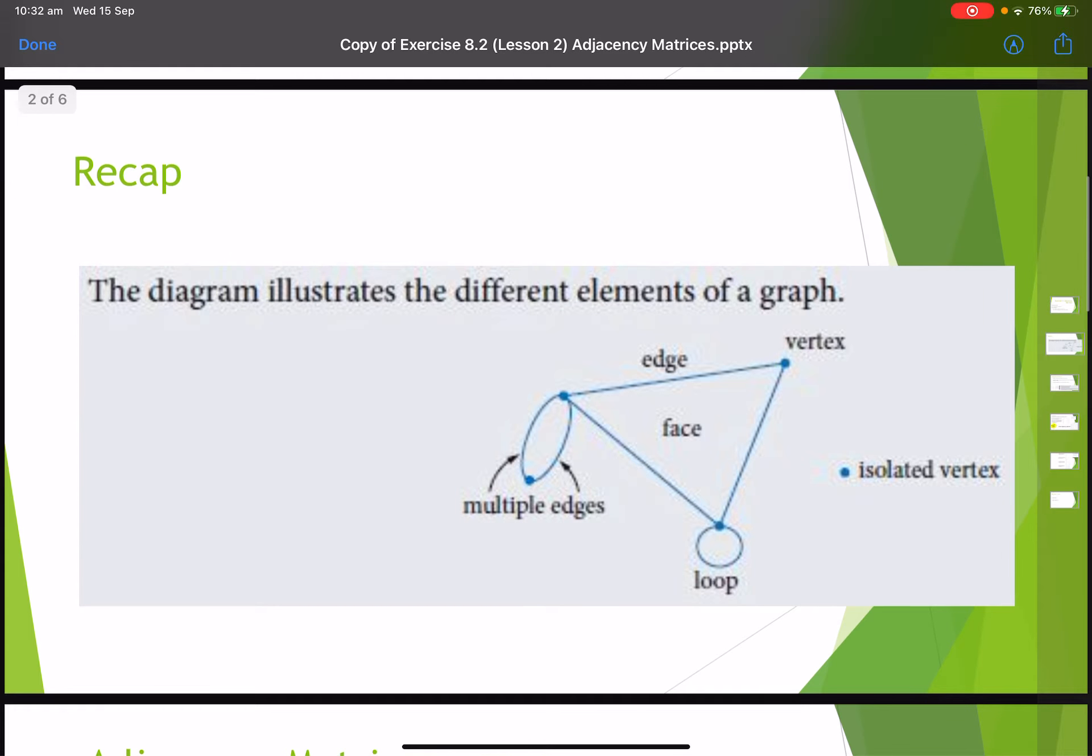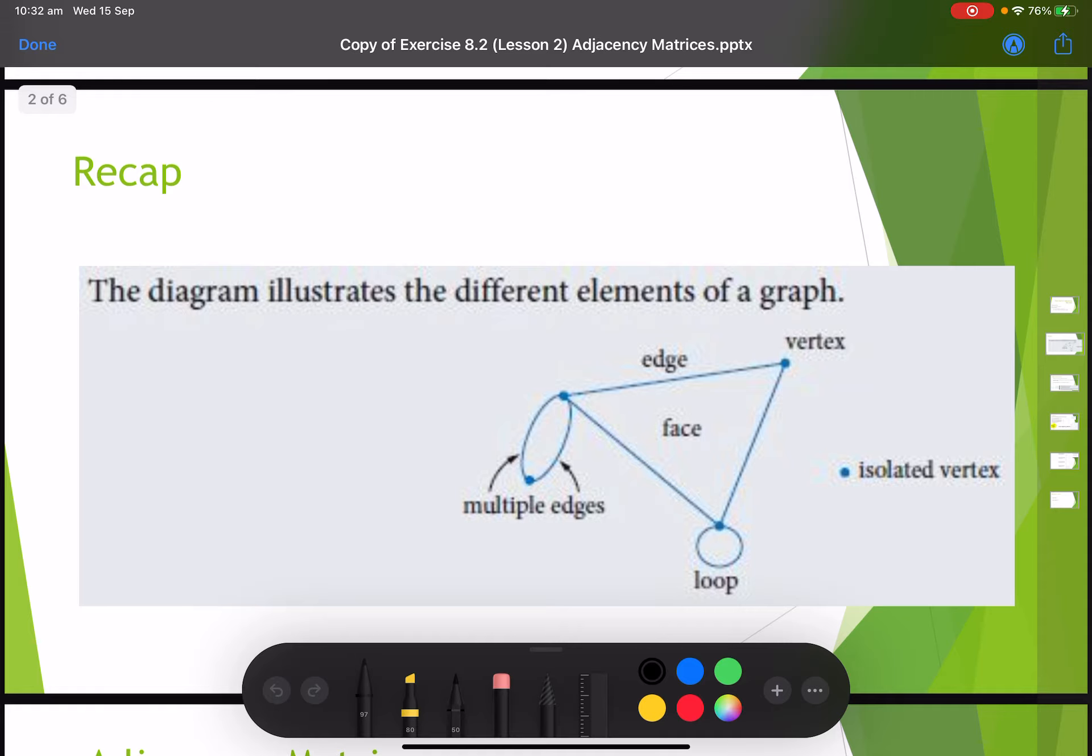Just to recap some important things we've already gone through, a diagram like this can show different elements of a network graph. We have our vertices, each one represents a singular vertex. One that's on its own not connected by any edges is called an isolated vertex. The edges join two vertices together. If between two vertices there are multiple edges joining them we call it a multiple edge, and if from a vertex we have a connection to itself we call that a loop.